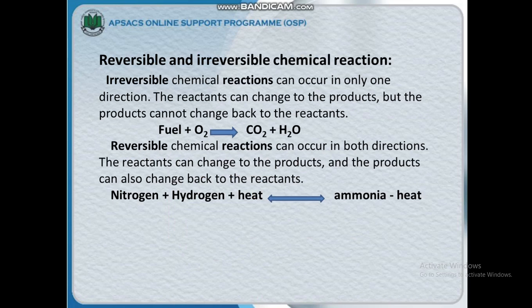The next topic is reversible and irreversible chemical reactions. Physical changes are reversible and chemical changes are irreversible. In a chemical reaction, new substances are made. An irreversible chemical reaction can occur only in one direction — the reactants change to products but the products cannot change back to reactants. For example: fuel plus oxygen makes carbon dioxide plus water. A reversible reaction can occur in both directions — the reactants can change to products and the products can also change back to reactants.